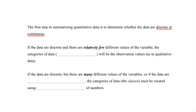Now if the data are discrete and there are relatively few different values of the variable, the categories of data — which we call classes — will be the observation values as in qualitative data, meaning nothing has changed. However, if the data are discrete but there are many different values of the variables, or if the data are continuous, then the classes must be created using intervals of numbers. It's these intervals that get a little bit technical.